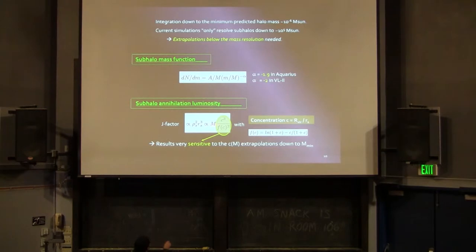As for the subhalo annihilation luminosity, this J-factor I was talking about before, it turns out that it is proportional to the third power of the concentration over this kind of function that depends on the concentration. This is the standard function f of c for NFW. Then you immediately realize that it actually depends a lot on how you extrapolate the concentration all the way down to the minimum halo mass. You can get very different results for the boosts. It's very sensitive to how you extrapolate things.